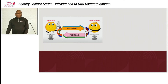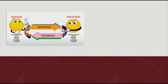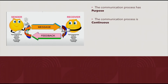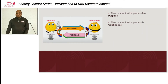Through our study of this process, we've been able to identify several important characteristics of communication. First, communication has purpose. This purpose could be to develop and maintain a sense of self, to meet social needs, to develop and maintain relationships, to exchange information, or even to influence others. Next, the communication process is continuous — it never stops. We even communicate while we're sleeping. Think about the times when you dreamt you were falling and right before you hit bottom, you jumped and woke yourself up. This is just one example of the continuous communication process.